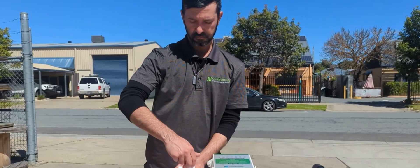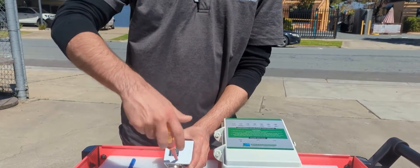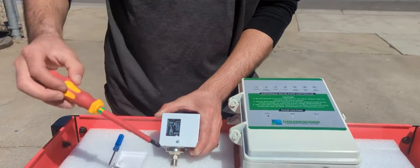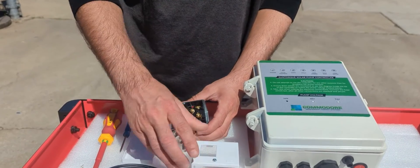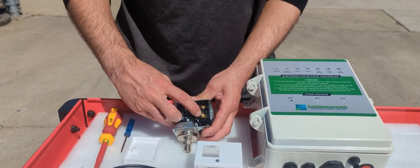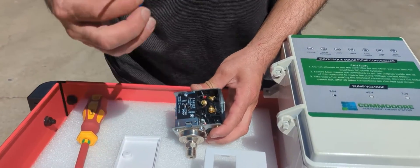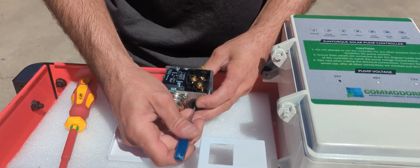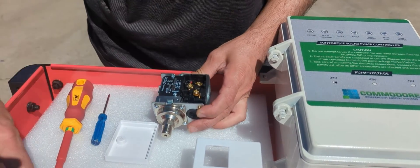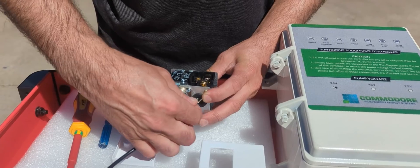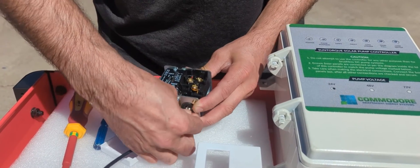Start off by taking off this screw on the front and lifting that away. So we're going to wire up to these two terminals. Grab a hole punch, put through the gland there, then grab your wires and stick them in through here.